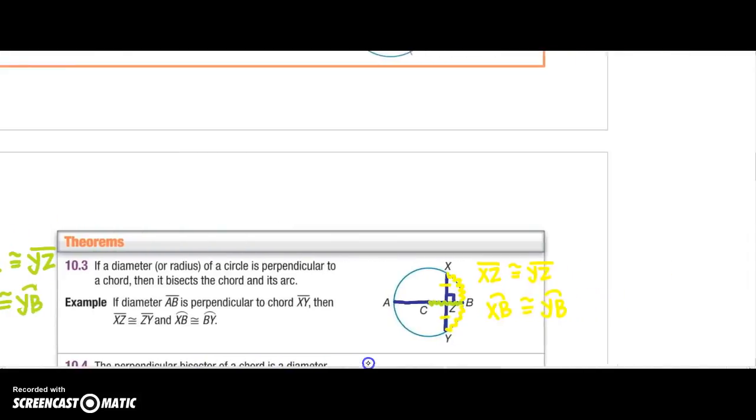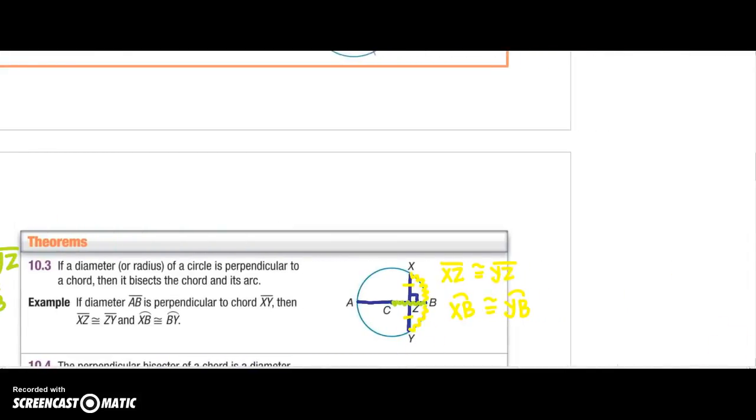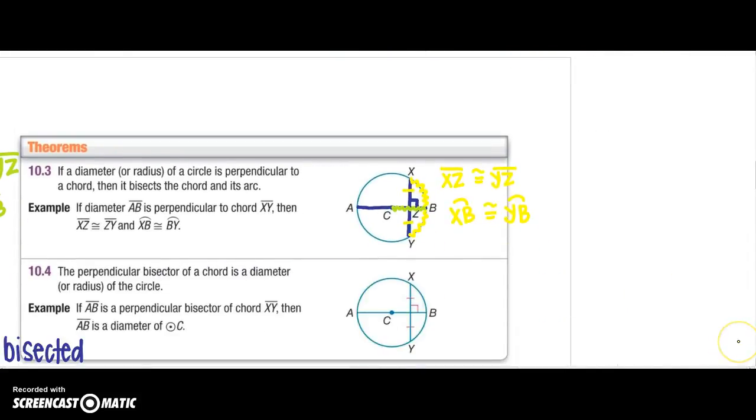All right, theorem 10.4 says the perpendicular bisector of a chord is a diameter or a radius of a circle. So if I can see that I have a chord and it is bisected, perpendicular bisected, then I can tell you that AB is the diameter.